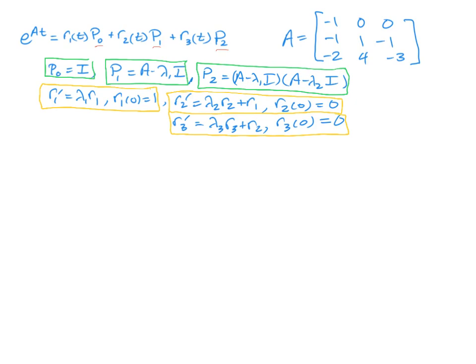Sometimes that's the same matrix times itself, or sometimes it's different depending on the values of lambda 1 and lambda 2. We also need to find the R's. The R1 of T satisfies the first differential equation here in yellow. R2 satisfies the second equation, and R3 the third.